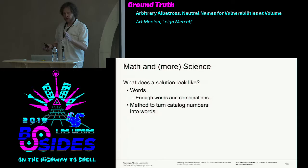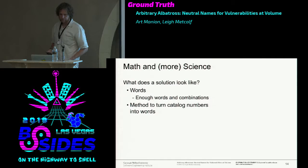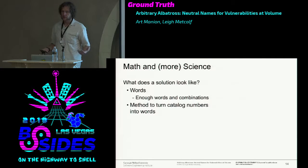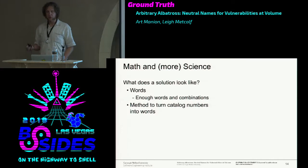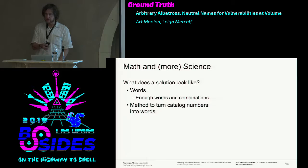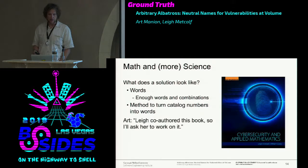We don't have a solid solution we've chosen as the right thing yet, but we've explored a lot of this space and Lee has done most of the work. What does a solution look like? We need words—enough to cover all the vulnerabilities. We need to turn the input, the CVE number, into words, and we need an algorithm or method to do that.